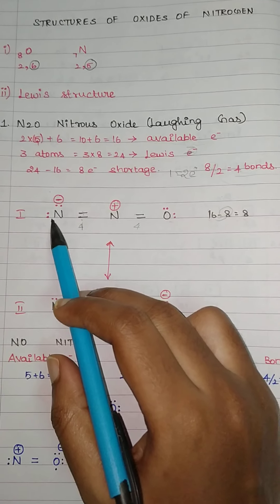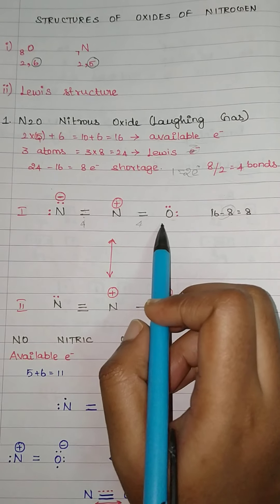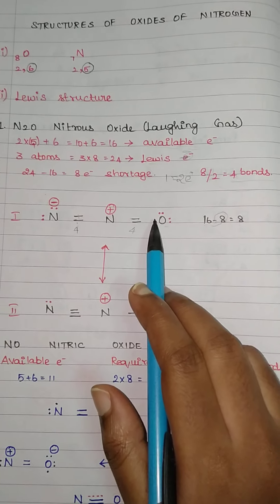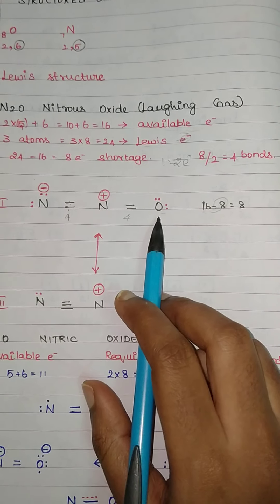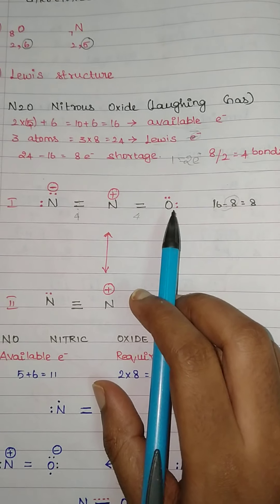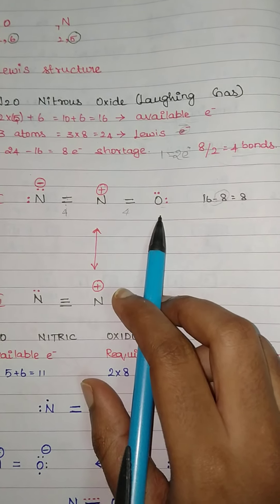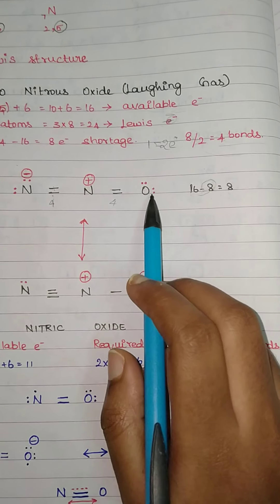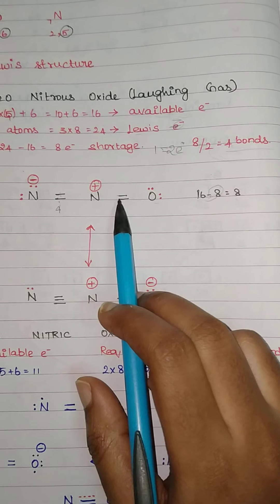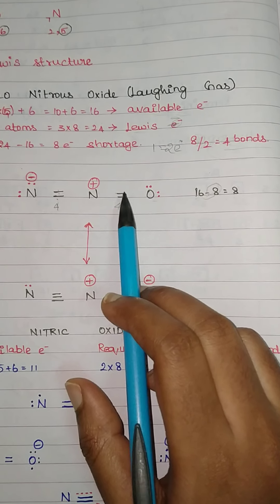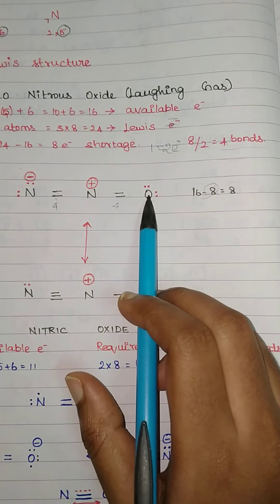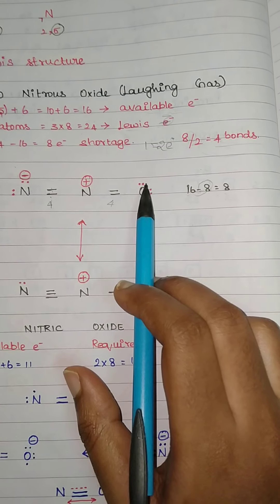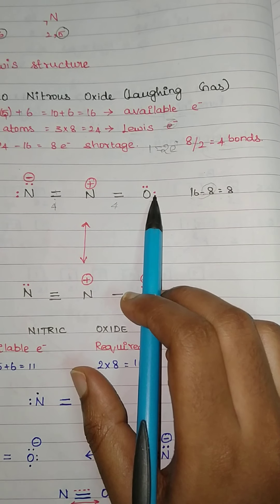Now check whether all the atoms are having their octet complete. You have to start from oxygen only, because you have to fill the remaining electrons from the highly electronegative atom first. Among oxygen and nitrogen, oxygen is highly electronegative. So if you see this oxygen, it is bonded this side with 4 electrons. It needs 4 more electrons to complete its octet, so put 4 more electrons on oxygen.